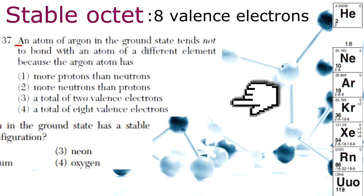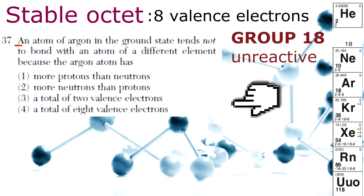Because these elements already have a stable octet, the elements of Group 18 are generally unreactive. An atom of argon in the ground state wouldn't bond with an atom of any other element, only because argon has a total of eight balanced electrons.